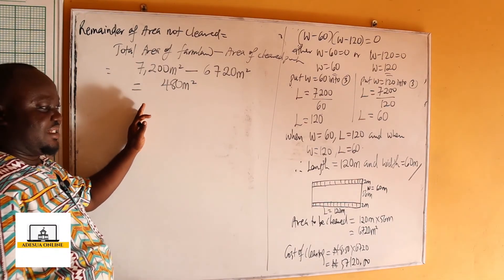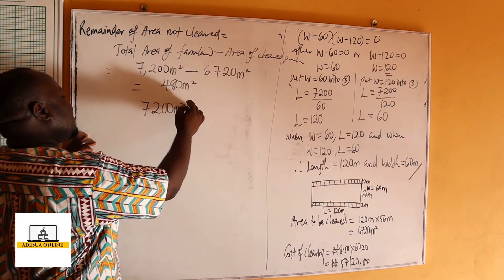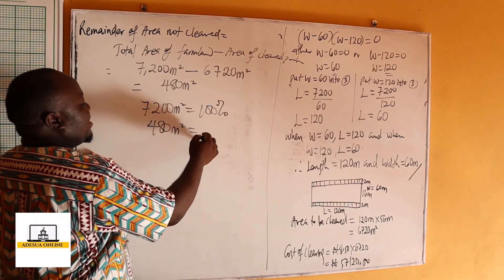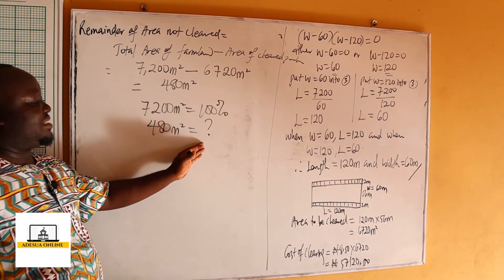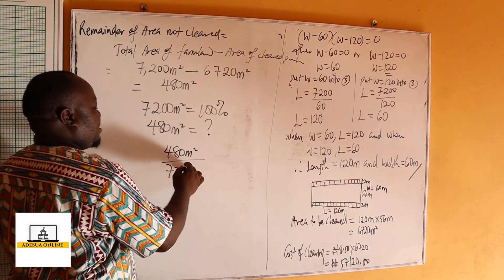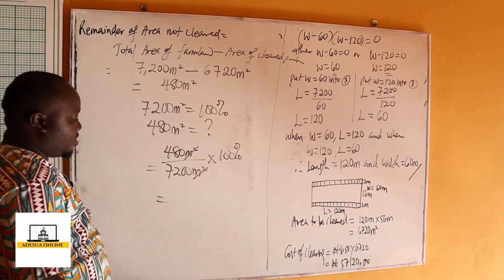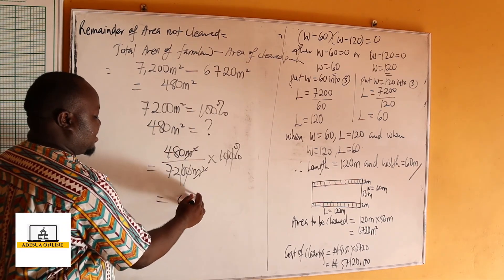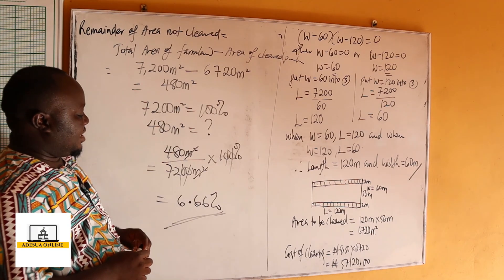To find the percentage not cleared: if 7,200 square meters equals 100%, then 480 square meters will be less. So we calculate 480 over 7,200 times 100%. The zeros cancel, leaving 480 over 72, which gives 6.66%. This is the percentage of the farmland that was not cleared.